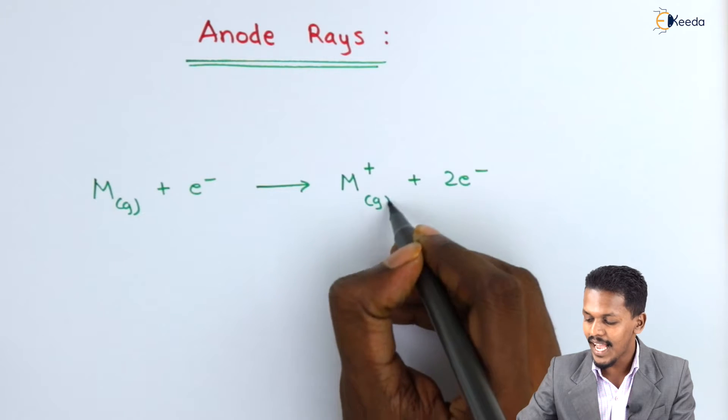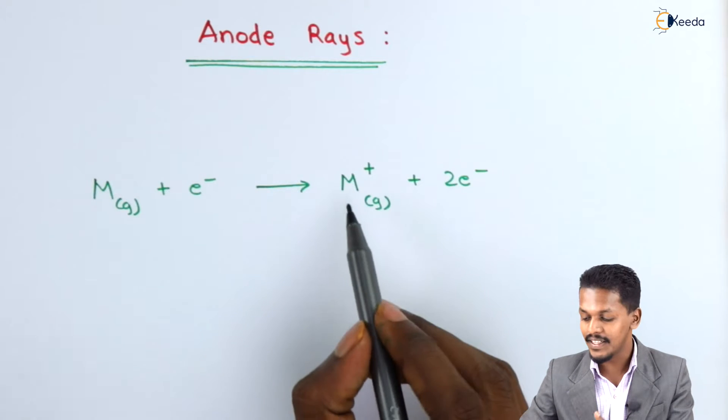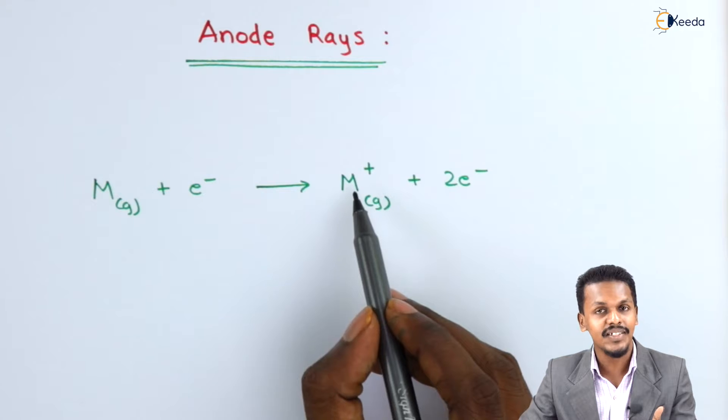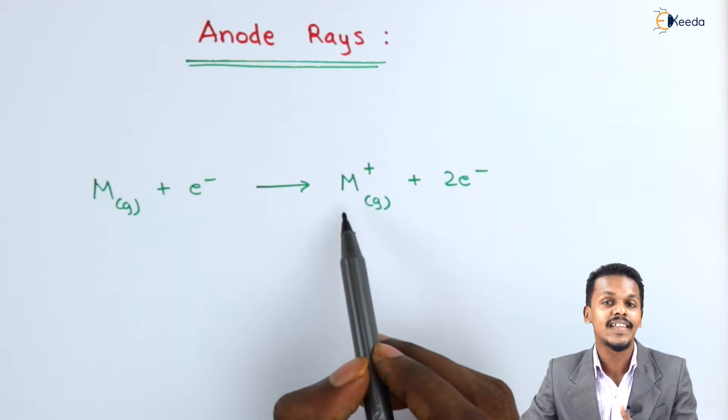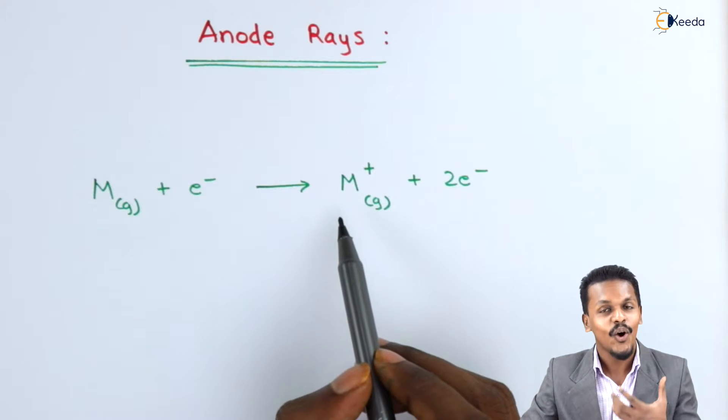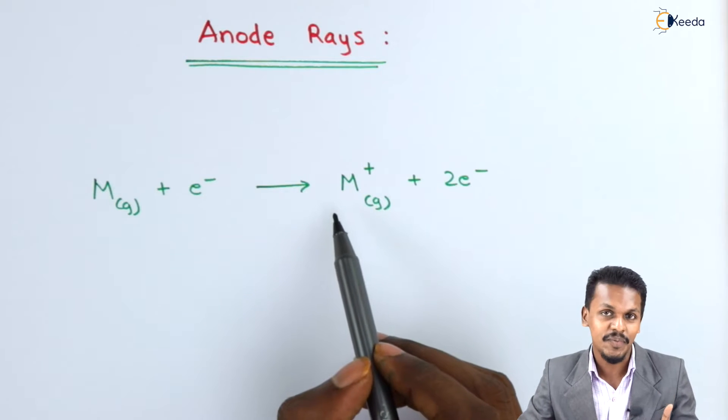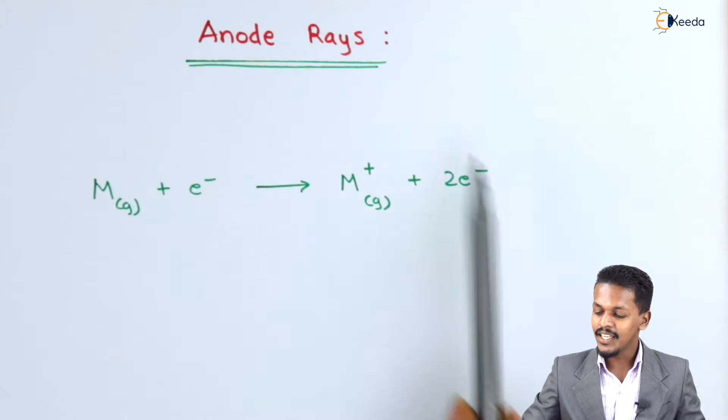And this ionized gas is nothing but it has a positive charge that makes it to be called as the anode particle or it is also called a positive particle.